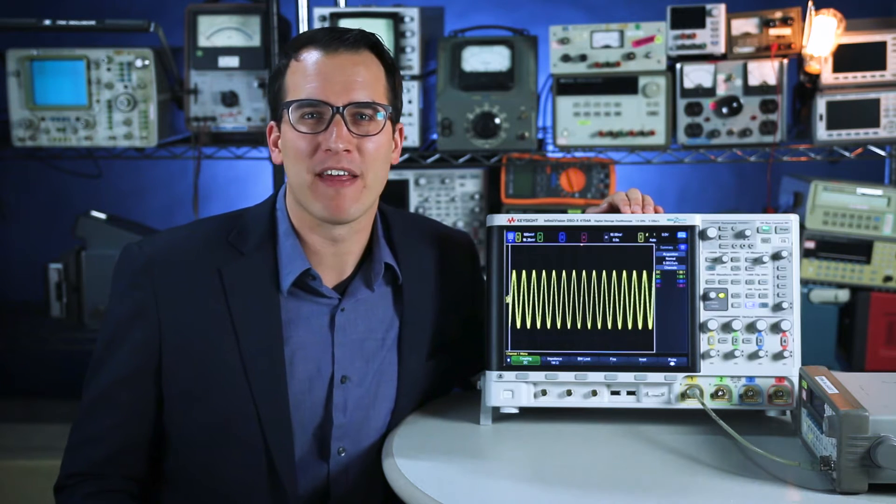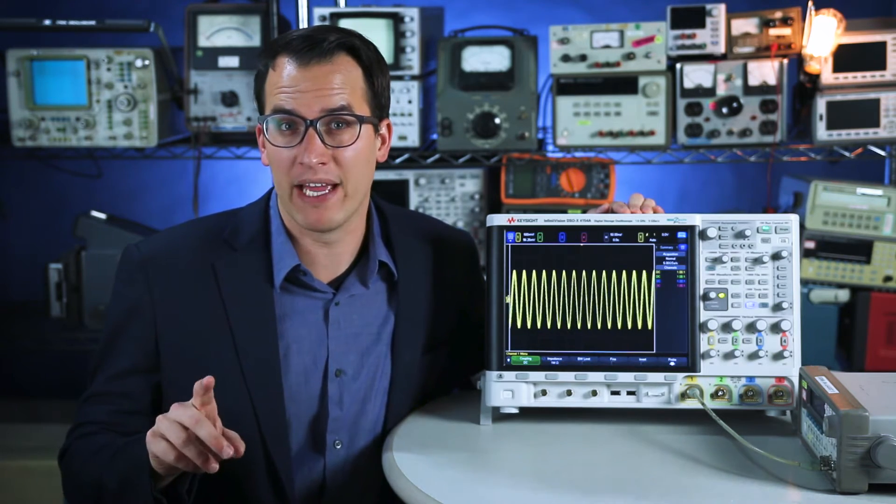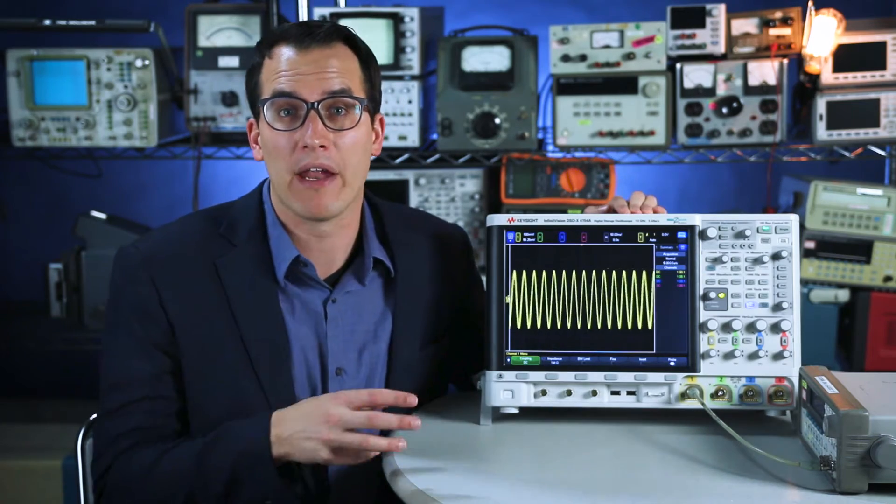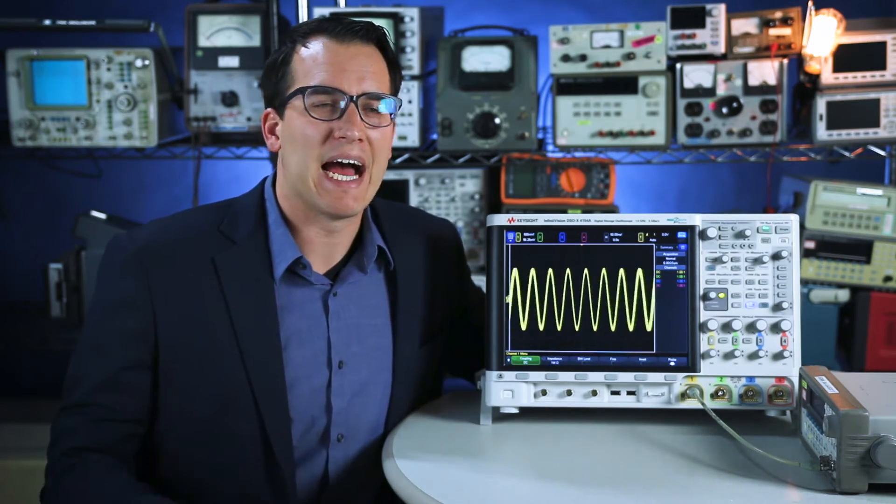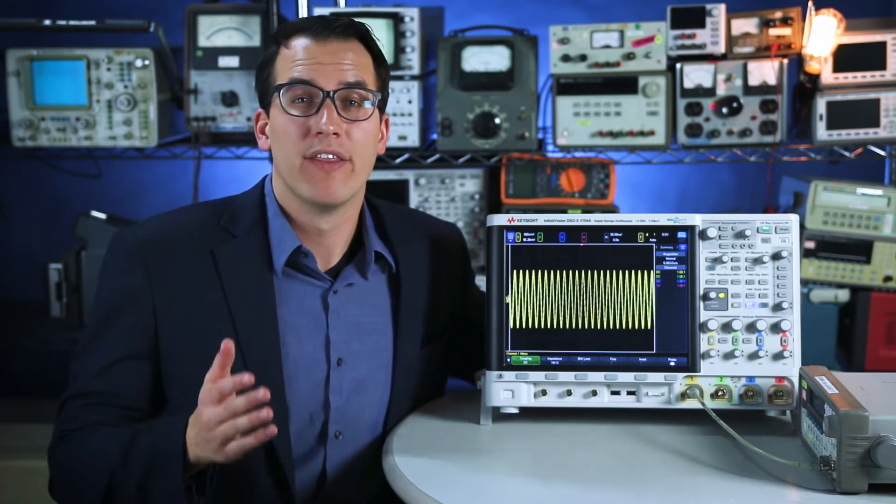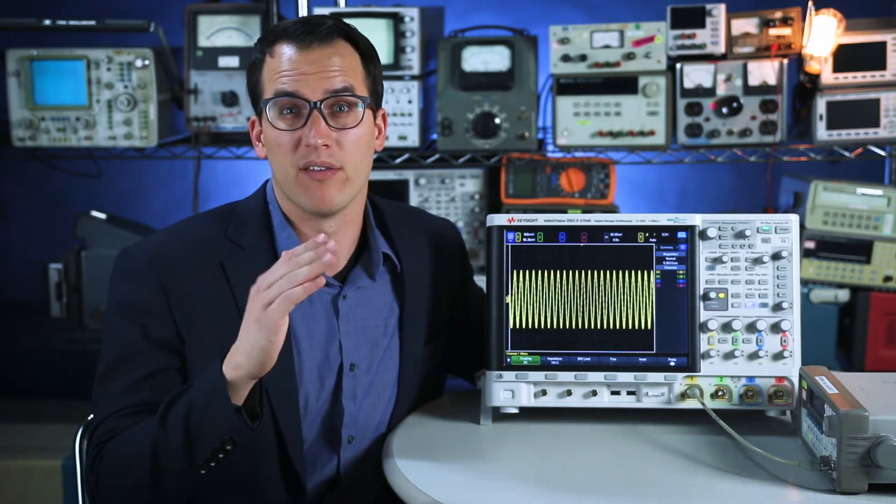Bandwidth is the banner specification for an oscilloscope and it can be described in two ways. The first way is how high of a frequency can the front end of this oscilloscope handle? The other way to describe bandwidth is by how fast of a rise time the oscilloscope can actually capture. The frequency of a signal and the rise time of that signal are inherently related.